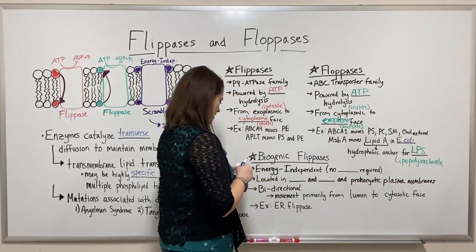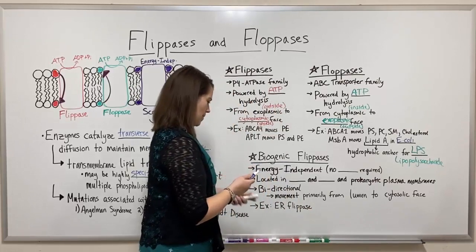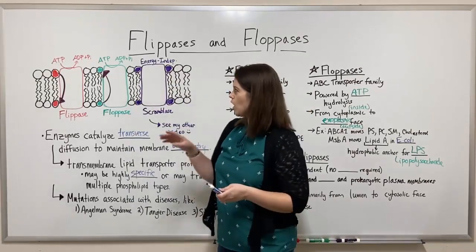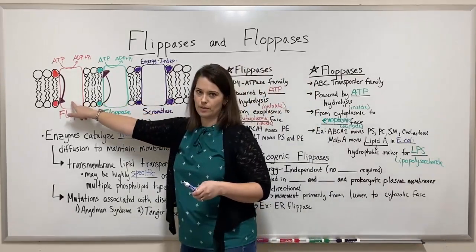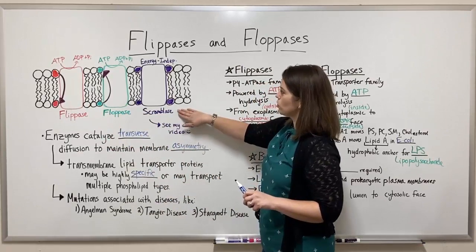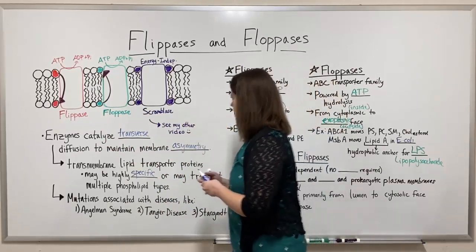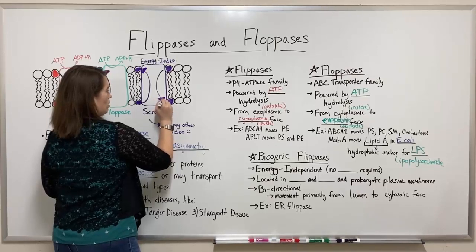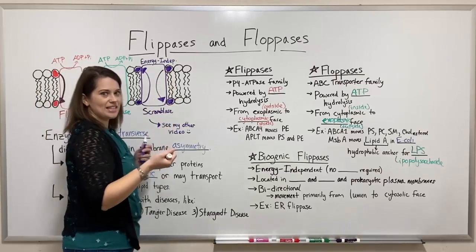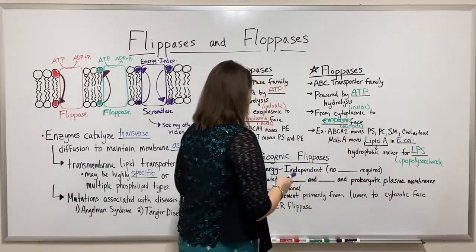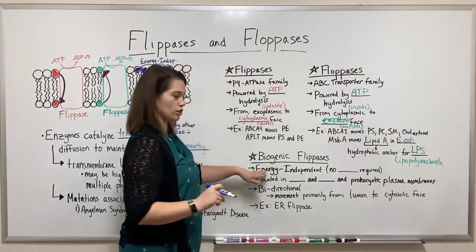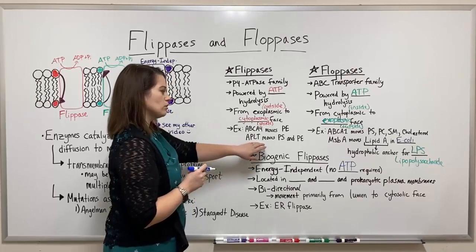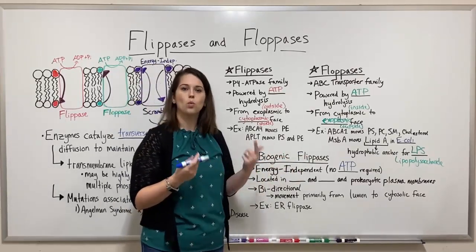Now let's turn our attention to biogenic flipases, which are maybe a little bit of a misnomer. Biogenic flipases are more like scramblases than other flipases. Scramblases move things in both directions and are energy-independent, meaning no ATP is required. Biogenic flipases are similar — energy-independent, so unlike regular flipases, no ATP hydrolysis is required.